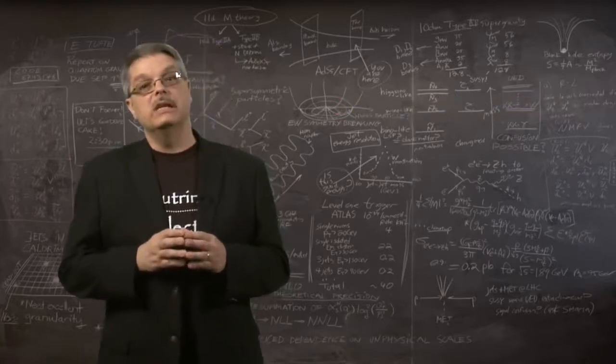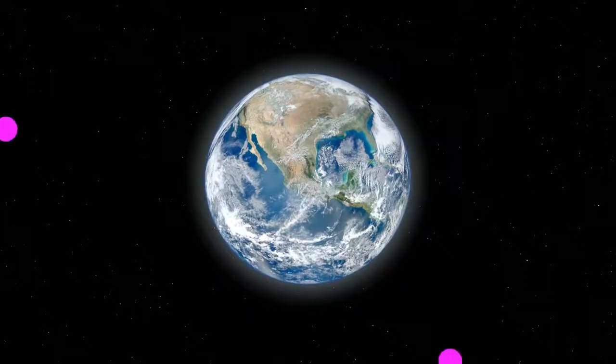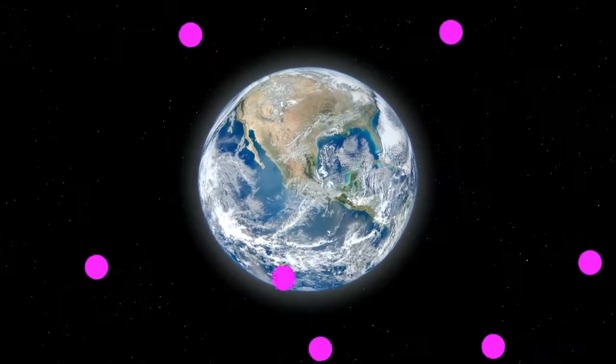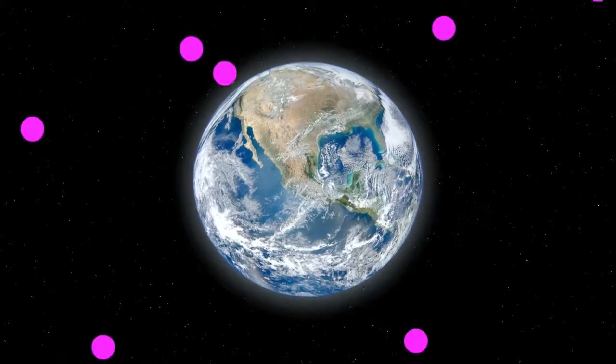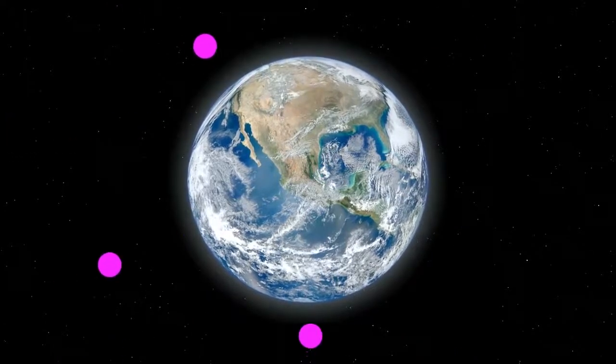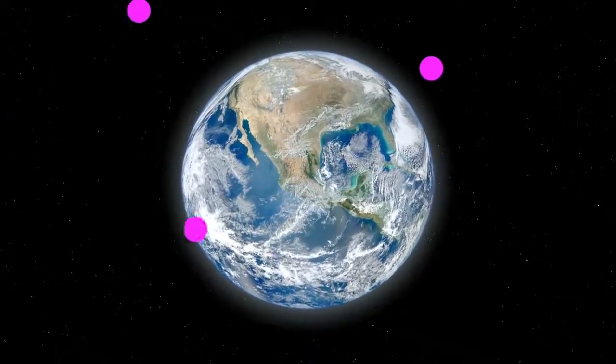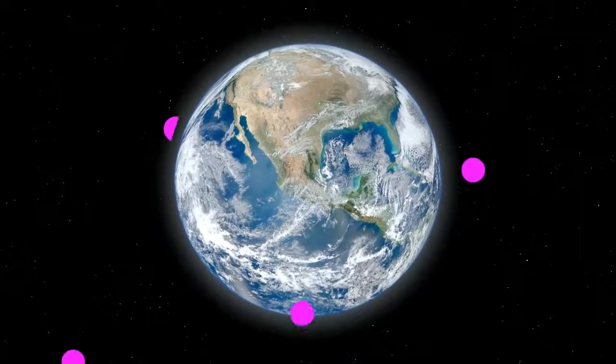Another source of neutrinos came from cosmic rays, which is the constant pelting of high-energy protons from the deepest space slamming into the atmosphere. Because of how the cosmic rays interact, each electron-type neutrino should be accompanied by two muon-type neutrinos.